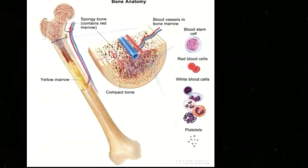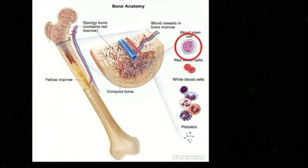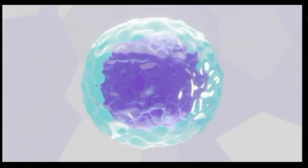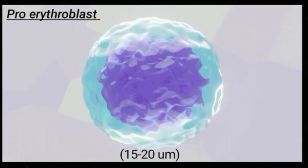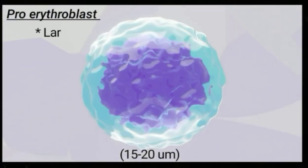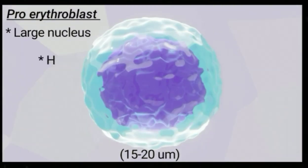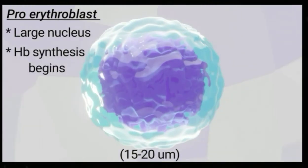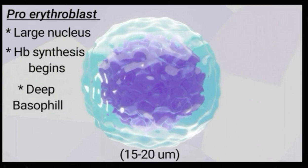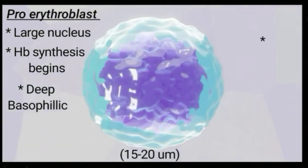Bone marrow contains stem cells which differentiate into proerythroblast. The proerythroblast has a large nucleus, hemoglobin starts to synthesize, it stains deep basophilic, and has an increased mitosis rate.